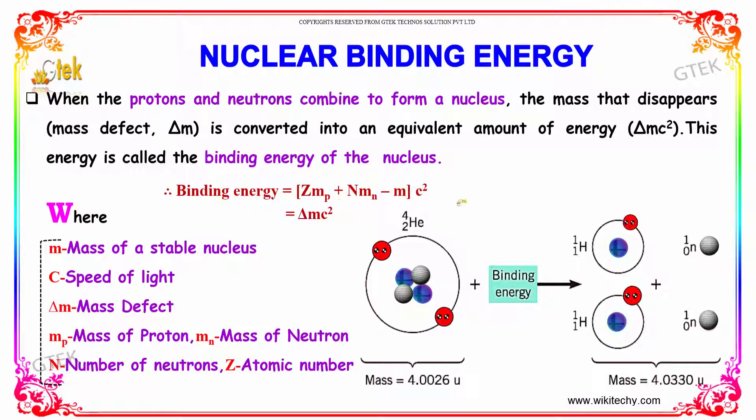From the previous equation, we get Z·mp + N·mn - m, multiplied by c². That's Δm·c². This is the binding energy.